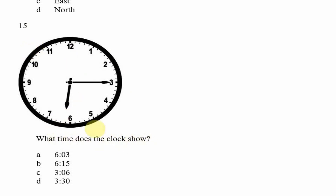Question 15: What time does the clock show? The short hand gives us the hours — it's very close to 6, so the hour is 6. The long hand gives us the minutes. The time interval between each marker is 5 minutes: 5 + 5 + 5 = 15 minutes. So the clock reads 6:15.